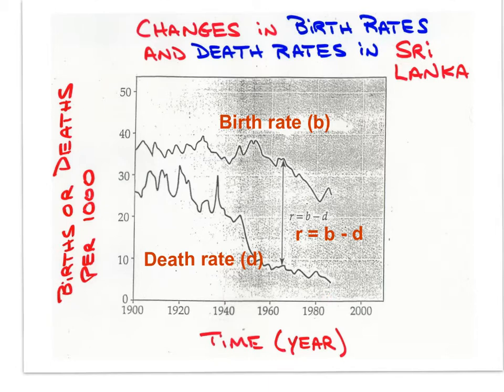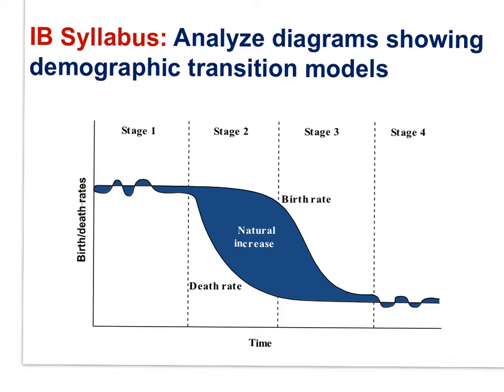In the 1970s, through development of education — particularly for women — and programs to provide contraception, and changing cultural norms about the role of women in society, birth rates began to drop and the natural increase rate declined slightly. Even to this day, Sri Lanka grows with a natural increase rate of 1.2%, which is above world average. Sri Lanka has passed through the stages of demographic transition, typical of many countries in the world.